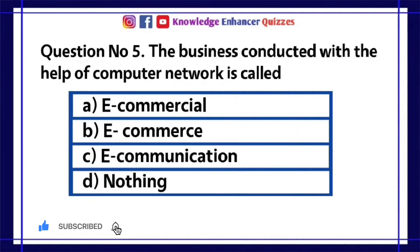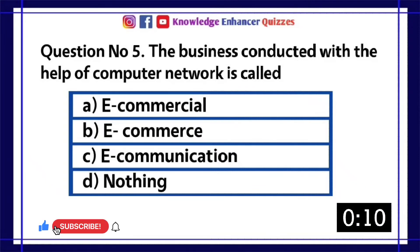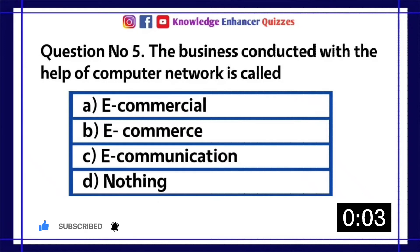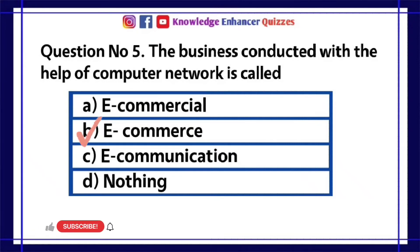Question number 5. The business conducted with the help of computer network is called. A e-commercial. B e-commerce. C e-communication. D nothing. Option B is the right answer.